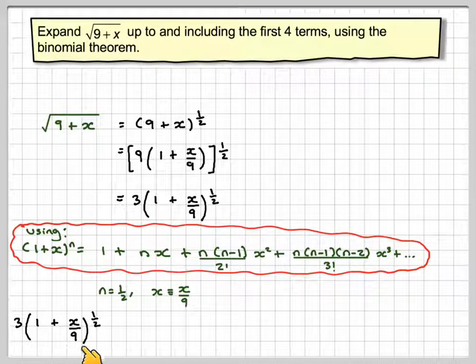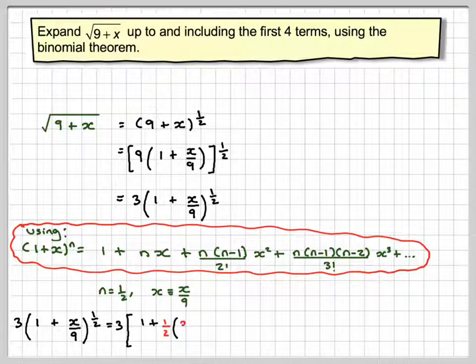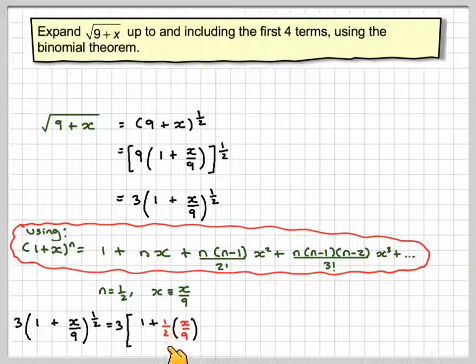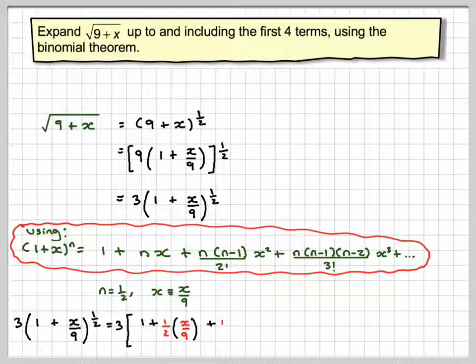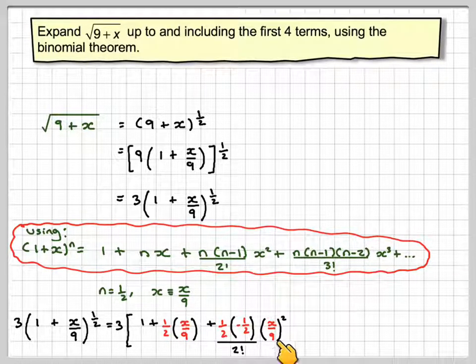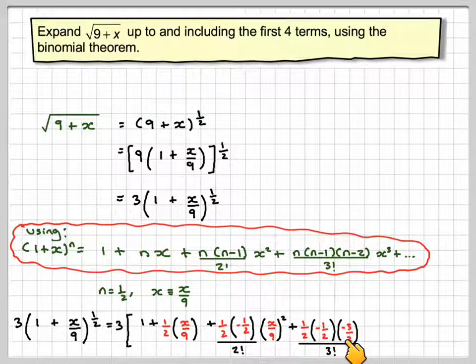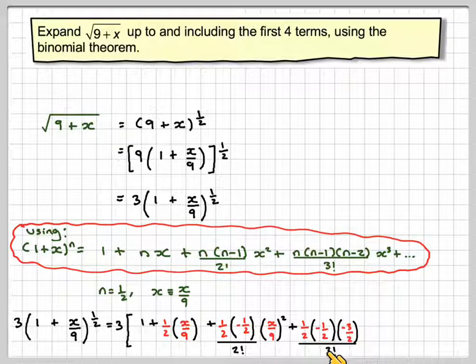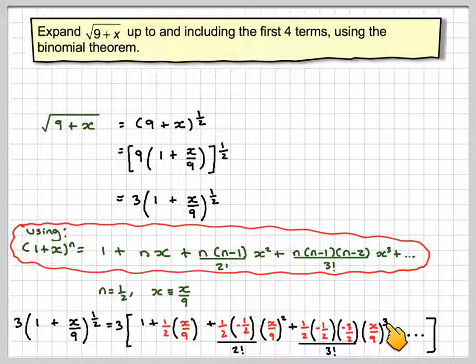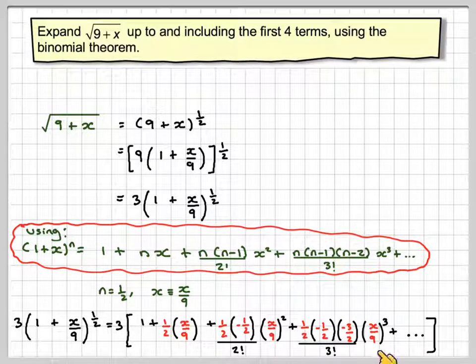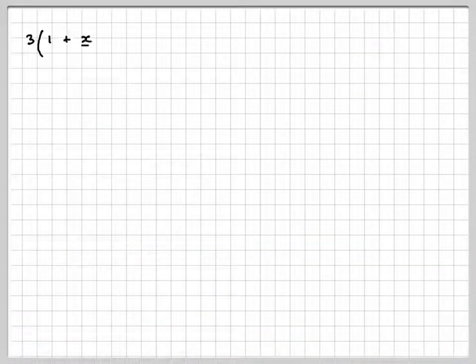So 3 times 1 plus x over 9 to the half will be 3 times big square bracket, 1 plus n which is a half times my value of x which is x over 9, plus a half times minus a half over 2 factorial times x over 9 all squared, plus a half times minus a half, take another 1 which is minus 3 over 2 over 3 factorial, times x over 9 cubed. Just writing that out again.